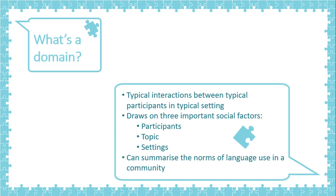For example, a sociolinguist will try to find as many data as possible about the interaction between certain people — let's say parents and children — when they are talking about certain topics like their daily life, what's for dinner, and where to go on holiday, in settings like at home. A domain will involve the same people, the same topics, and the same settings. A domain is repetitive.